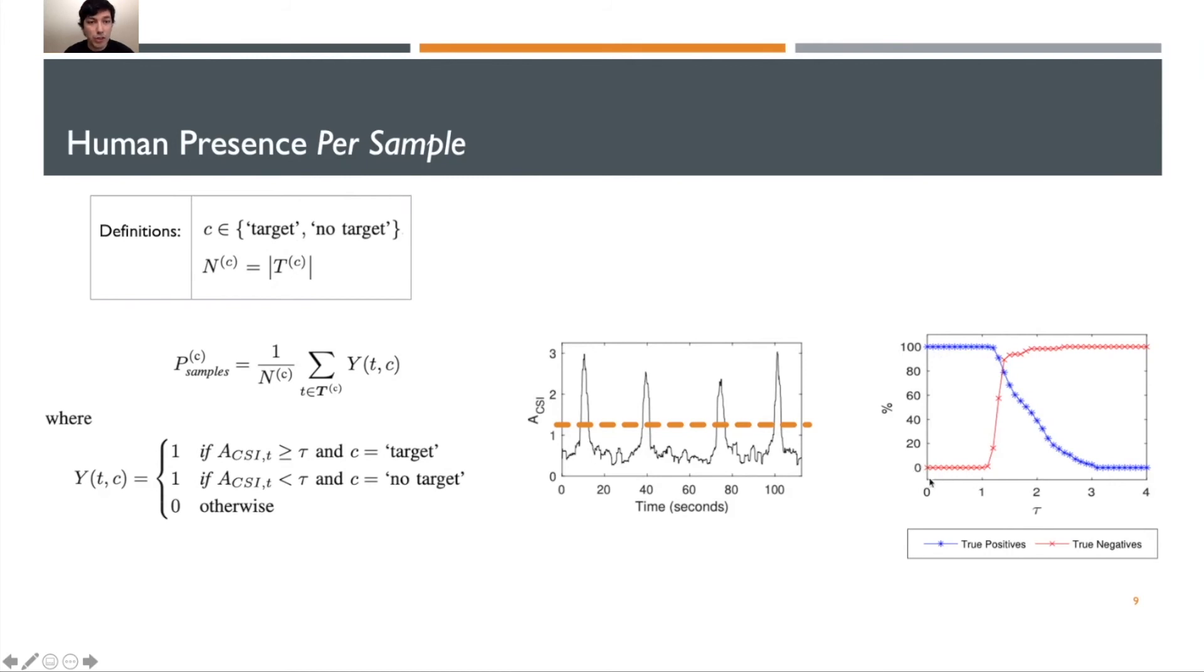Inversely, when we start with a low value of tau, we have 0% true negatives and quickly we end up with 100% true negatives. What is important to notice is that there's no overlap where we can achieve 100% true positives and 100% true negatives.